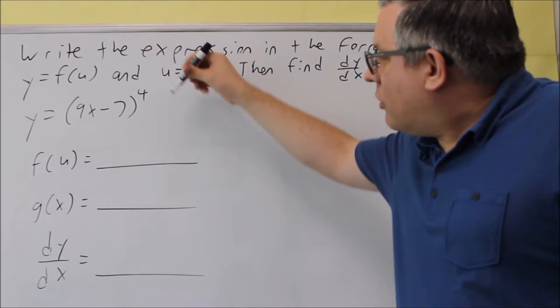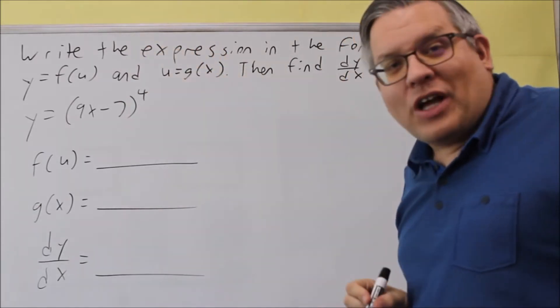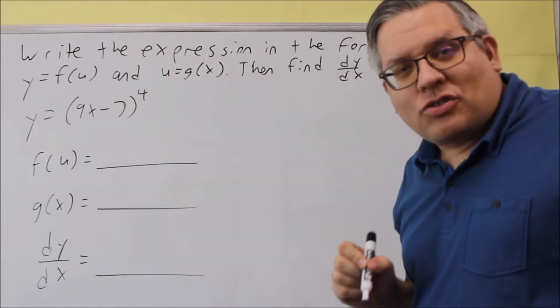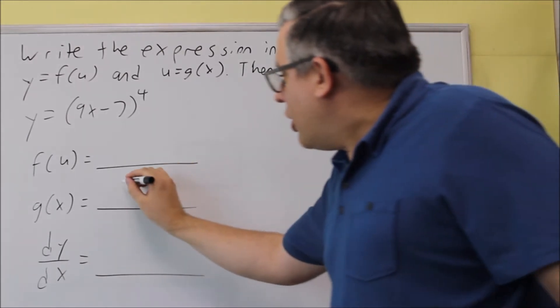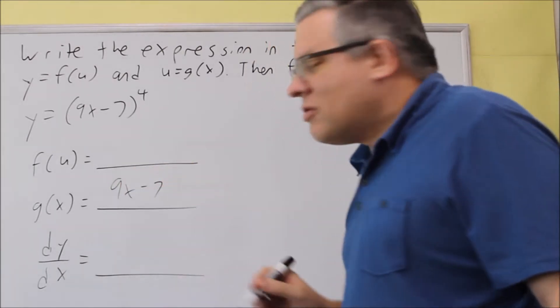So first, the inside function, that's always going to be your g of x, or the u in this case, and so we're going to go ahead and put that down: 9x minus 7.